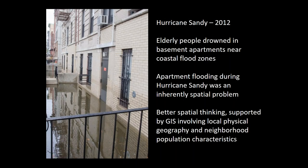I used this as an argument in my NSF proposal: Hurricane Sandy 2012. People drowned in Manhattan living in basement apartments. Had there been a better understanding of where people lived, where they were below sea level, their vulnerability, there could have been better spatially oriented planning to perhaps save lives. This is a map one of my students made over the summer looking into perceptions of Plan 2014. Spatial thinking and disasters — even basic map reading is important.